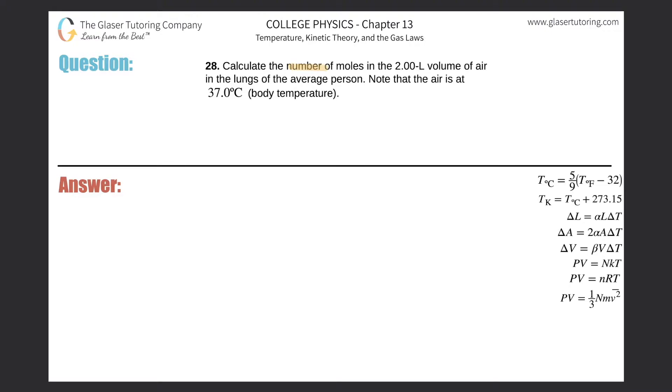Number 28: Calculate the number of moles in the two liter volume of air in the lungs of the average person. Note that the air is at 37 degrees Celsius. Okay, so in order to do this problem we have to start with the ideal gas law.